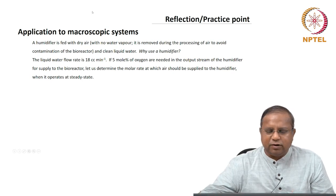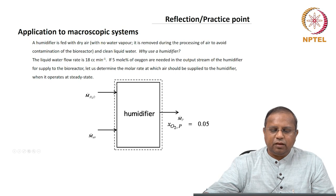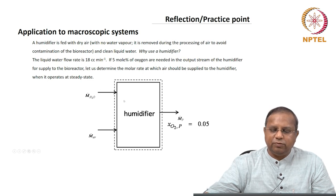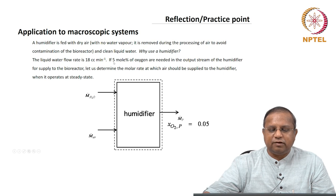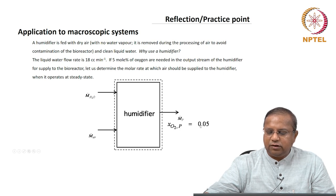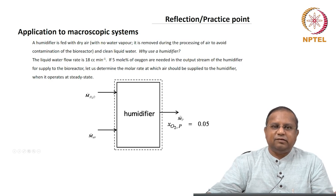Let me present a figure to help you understand. This is the humidifier. You have dry air coming in, water that is probably sprayed into the humidifier so that it saturates the air, and then the product stream coming out. The product needs to have a mole fraction of oxygen of 0.05, which translates to 5 mole percent. This is the statement that is made.